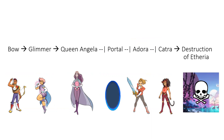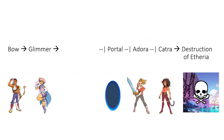What if someone isn't present in the network? What happens if Angela isn't there? Well, then there is nothing to inhibit the portal, and so Adora is inhibited, so she can't stop Catra. Etheria will be destroyed.